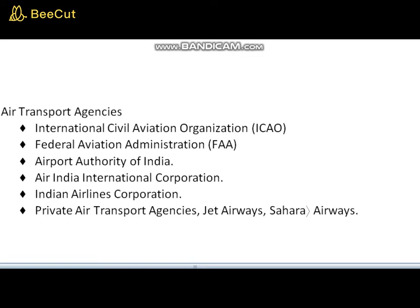The Assembly is composed of representatives from all contracting states and is the sovereign body of ICAO. The Council is the governing body elected by the Assembly for a three-year term, composed of 36 states out of the total member countries. The Secretariat is headed by a Secretary General and is divided into five main divisions: the Air Navigation Bureau, the Air Transport Bureau, the Technical Cooperation Bureau, the Legal Bureau, and the Bureau of Administration and Services.